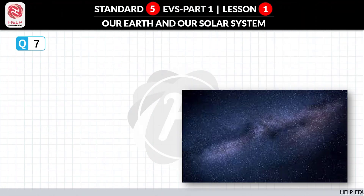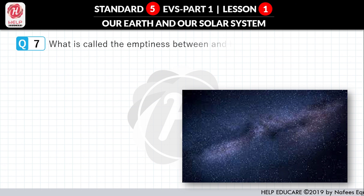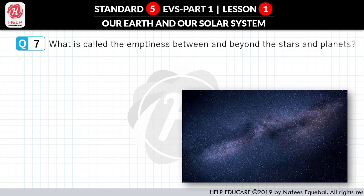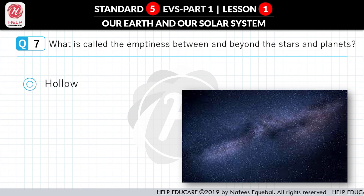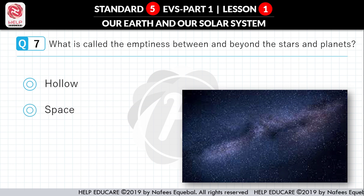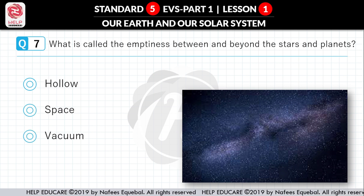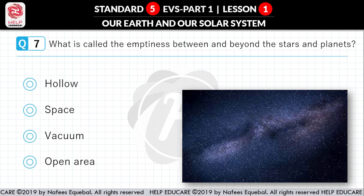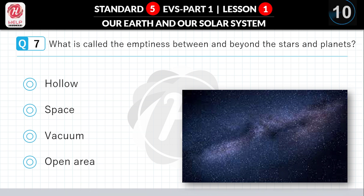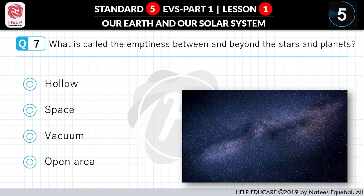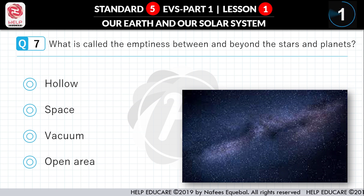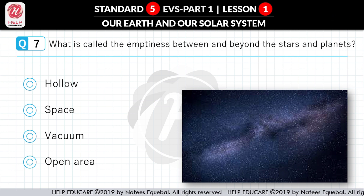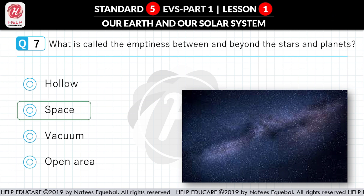Question No. 7: What is called the emptiness between and beyond the stars and planets? First option: hollow. Second option: space. Third option: vacuum. Fourth option: open area. Correct answer is Space.